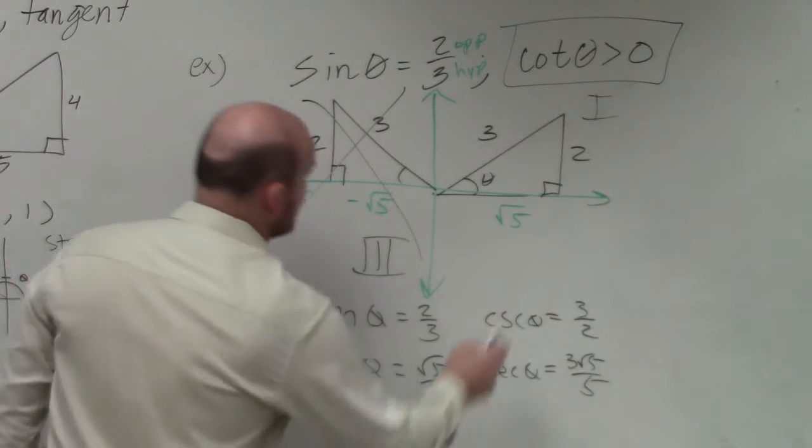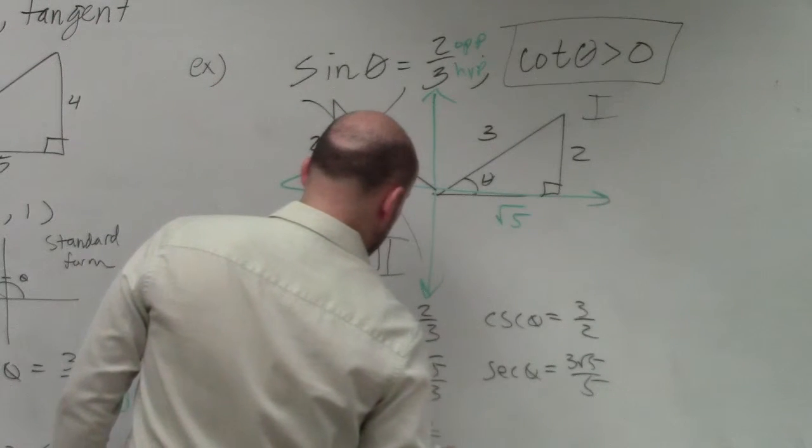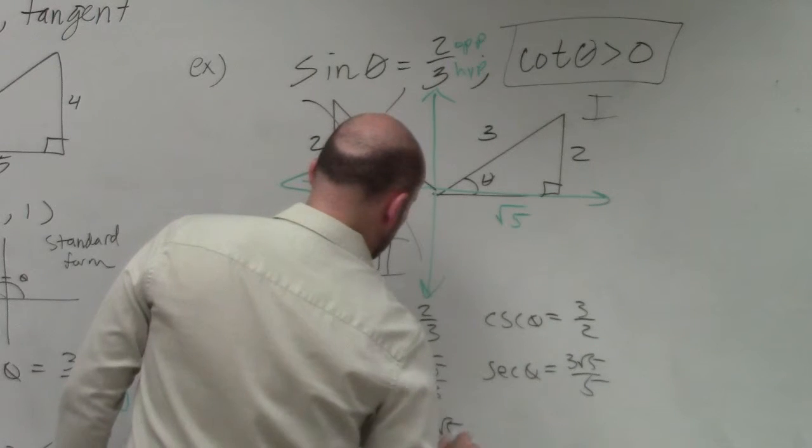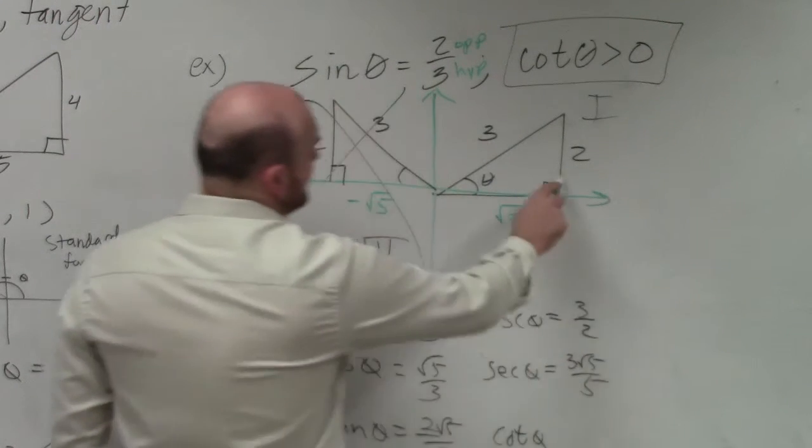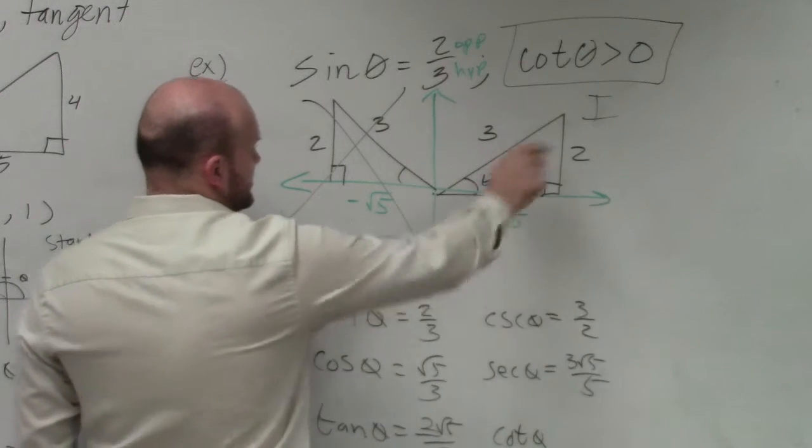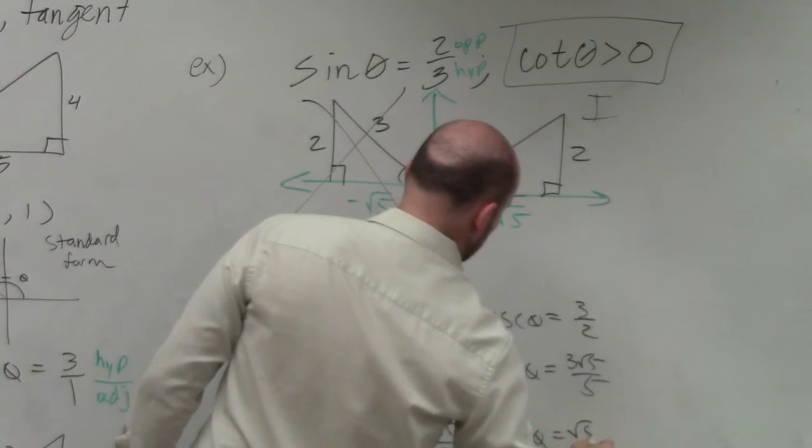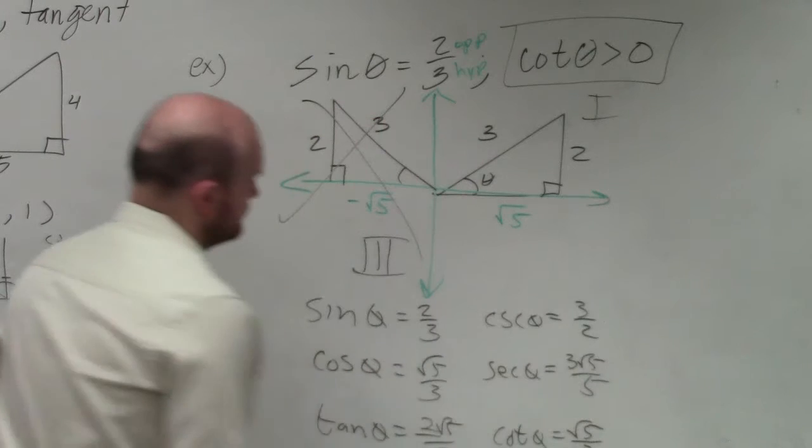Tangent of theta is opposite over adjacent. So that's 2 over square root of 5. And cotangent of theta is going to be adjacent over opposite, which is square root of 5 over 2. And that's it.